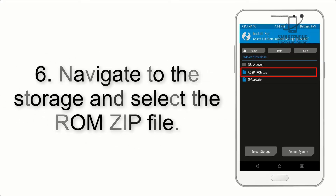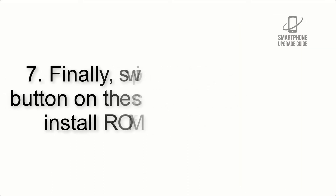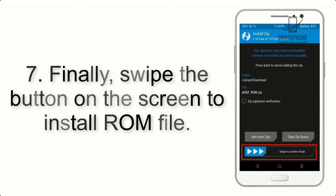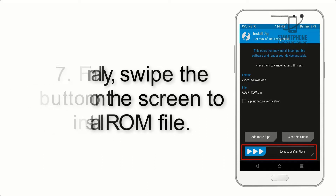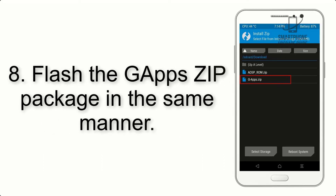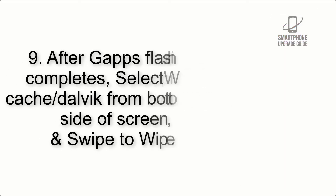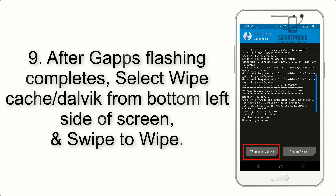Step 5: Go back to the recovery main screen and tap on the Install button. Step 6: Navigate to the storage and select the ROM zip file. Step 7: Finally, swipe the button on the screen to install the ROM file.